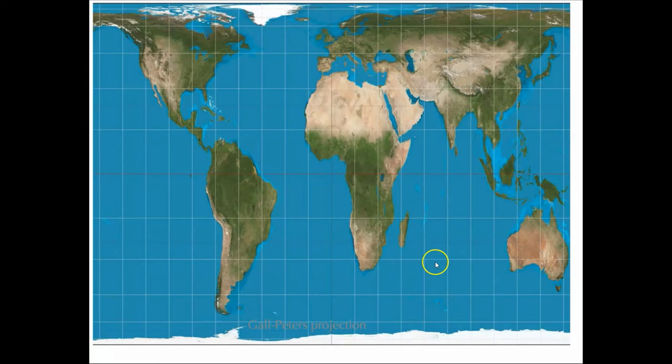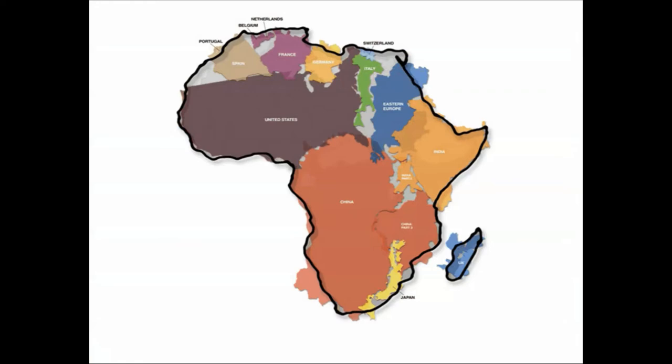Just to put in perspective of how large the continent of Africa is here, this is a representation outline of Africa. We've got the whole contiguous U.S., all of China, all of India, all of Eastern Europe, and several other countries. United Kingdom taking up Madagascar here. I mean, Africa is just an enormous continent.